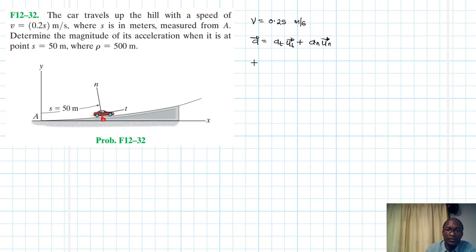And then we know that our at itself is just going to be equal to v dot, which is equal to dv/dt. In our case, we do have an s, so we can use chain rule. So this becomes dv/ds times ds/dt. So let our ds/dt just be equal to our v. So therefore our v at...